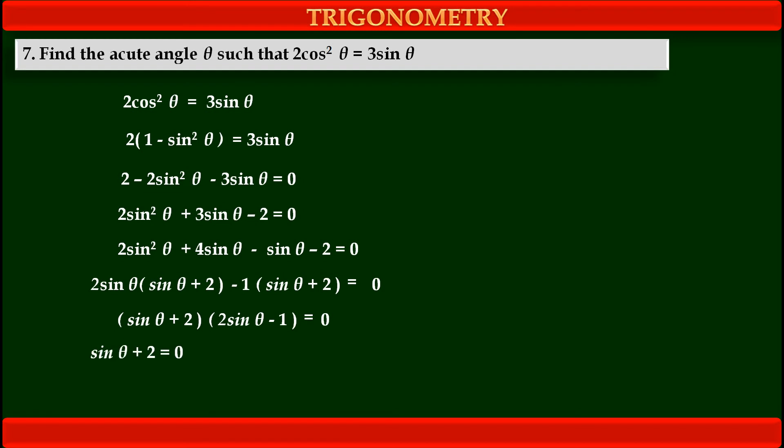That means, either first bracket sinθ + 2 = 0 or second bracket 2sinθ - 1 = 0. That means, either sinθ = -2 or sinθ = 1/2.